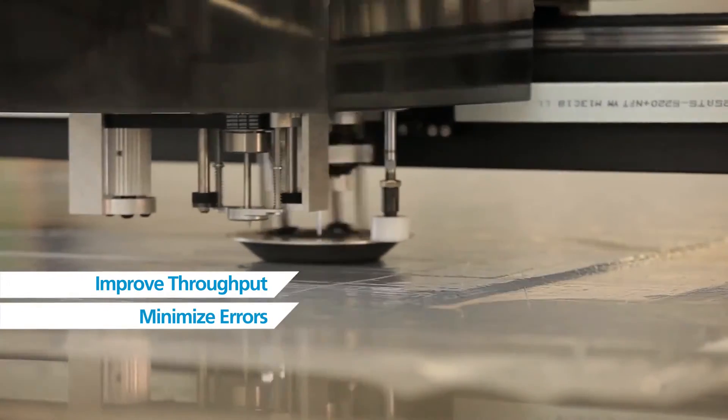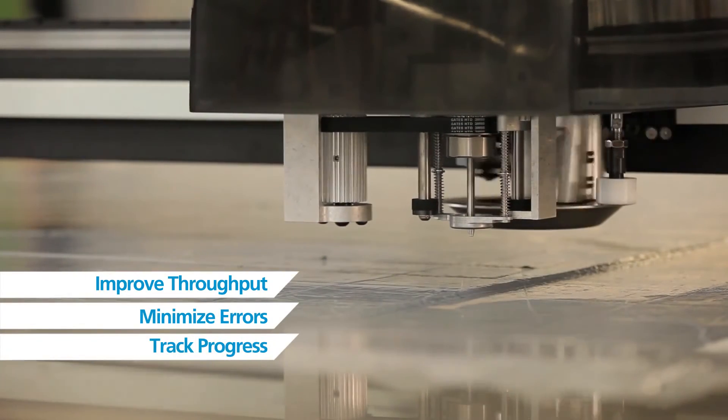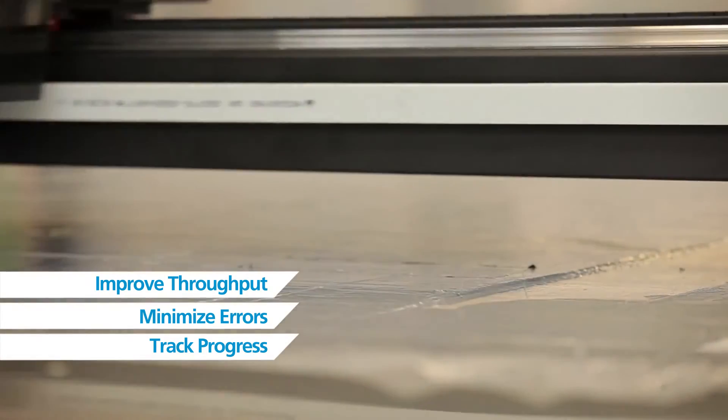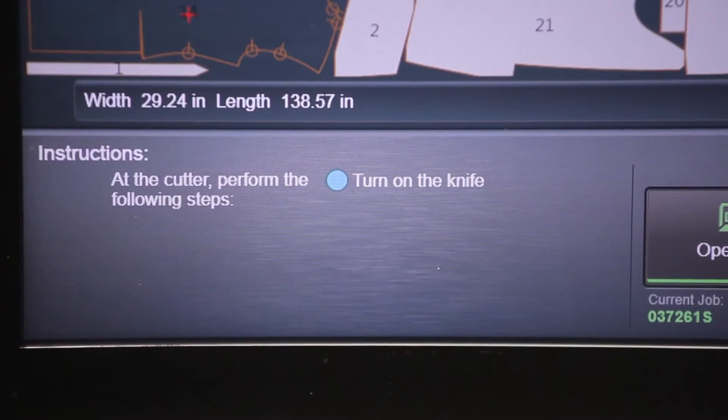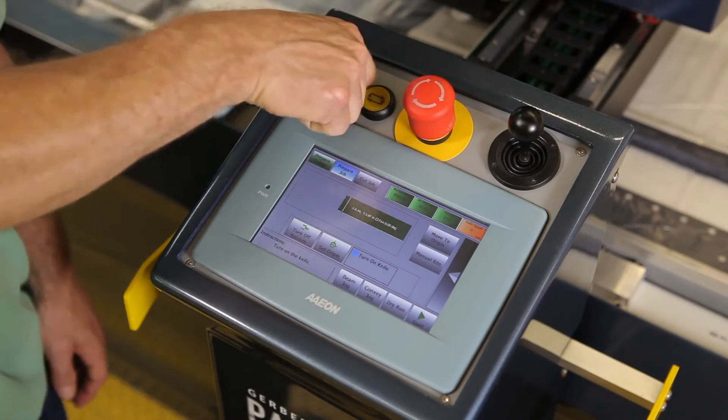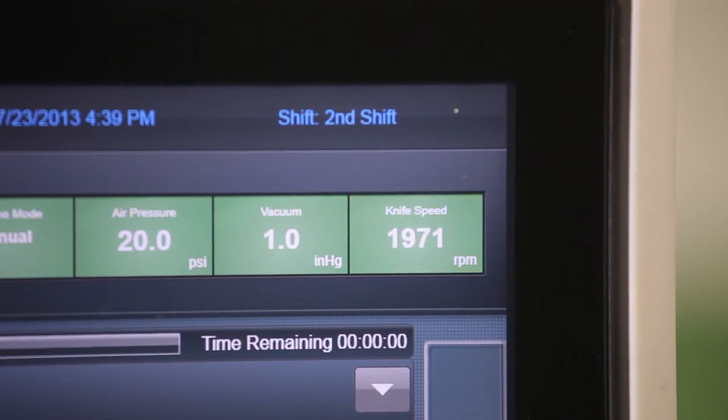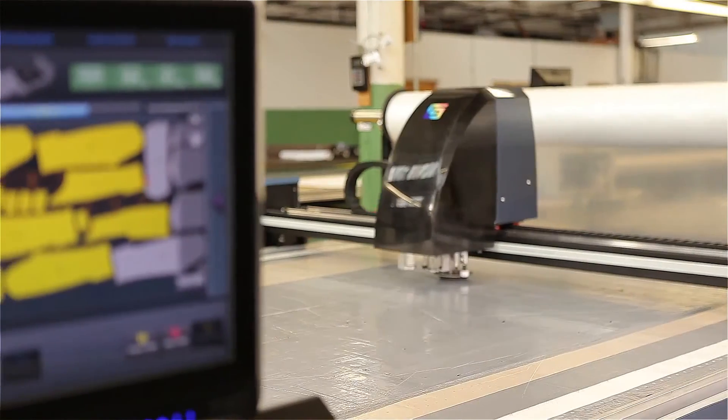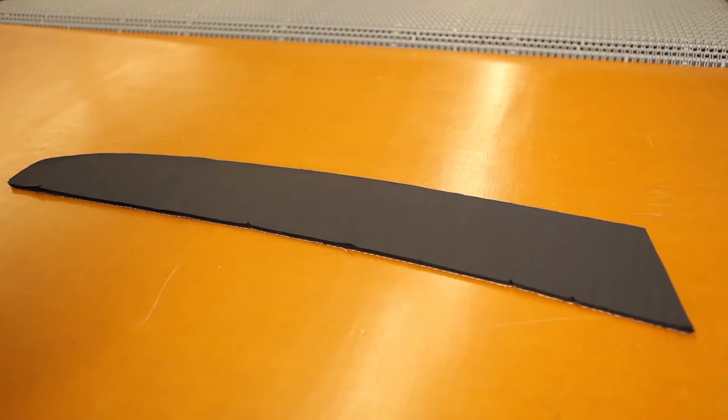What we've done with Paragon is really take a look at all of the points of contact that the user needs to interact with and made those points of contact much easier to navigate. From a maintenance standpoint, from an adjustment standpoint, we've really tried to eliminate as many adjustments as possible so that the user gets consistent cut quality parts every time, because we've made it simple by design.